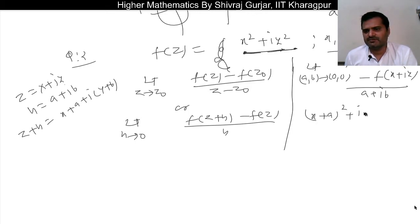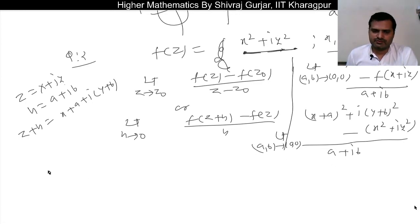So limit as a, b tends to zero: [f(x+a + i(y+b)) - f(x + iy)]/(a + ib). Okay, so now put the values. [(x+a)² + i(y+b)² - x² - iy²]/(a + ib), limit a, b tends to zero.